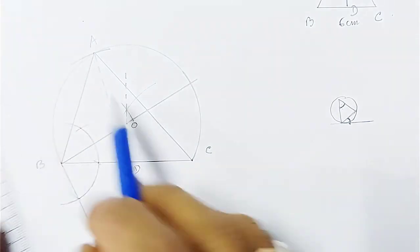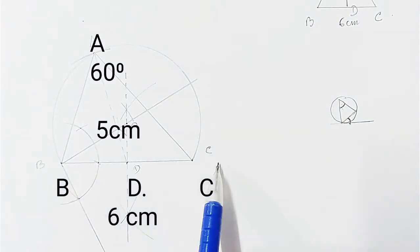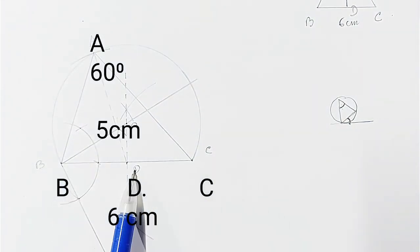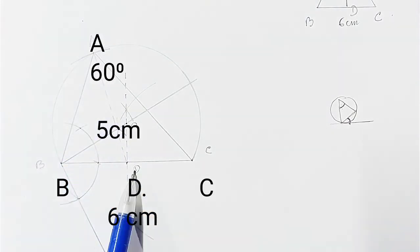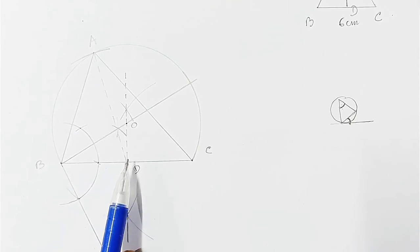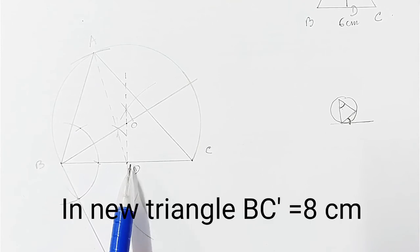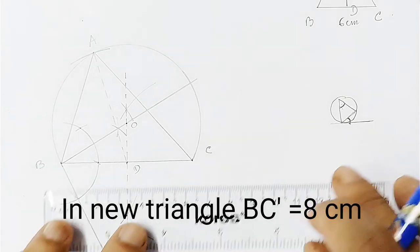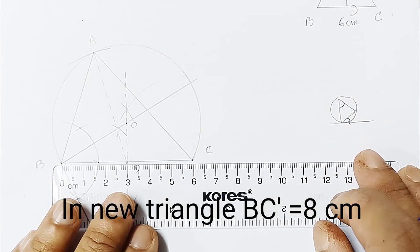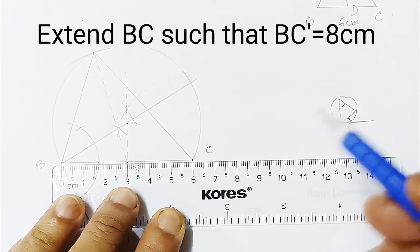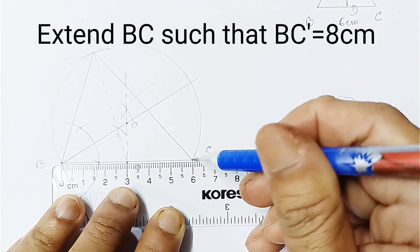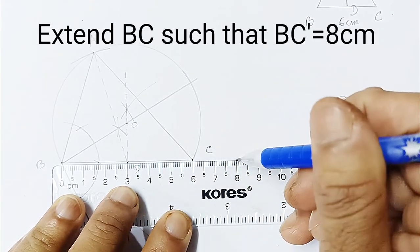This is the required triangle ABC with BC equal to 6 centimeters, angle A equal to 60 degrees, and AD equal to 5 centimeters. Now we have to draw another triangle where base BC' is 8 centimeters. Since BC is already 6 centimeters, we extend it up to 8 centimeters.